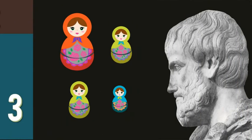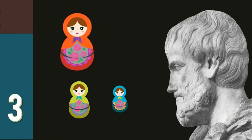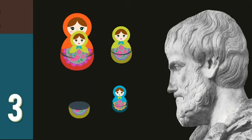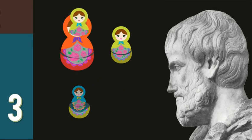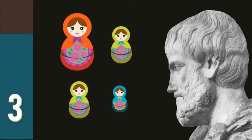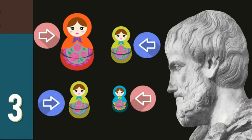We know something about the relationship between the green doll and the red doll, and we know something about the relationship between the blue doll and the green doll. Using that information, we can understand the relationship between the red doll and the blue one, because that relationship is mediated by the green doll.